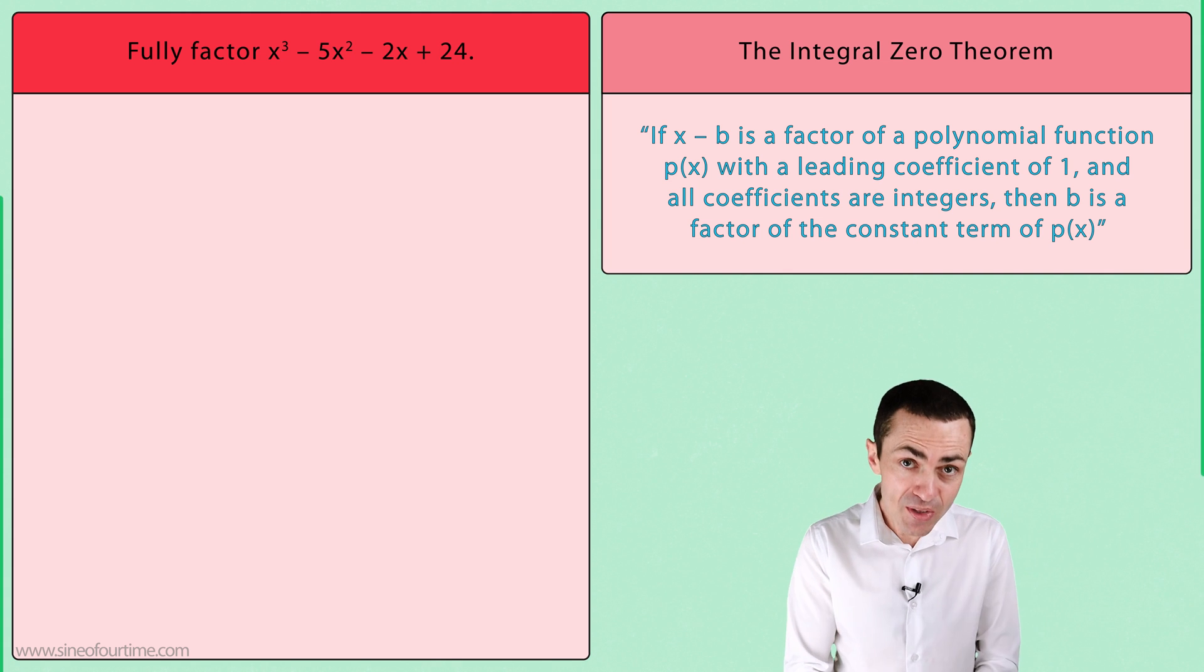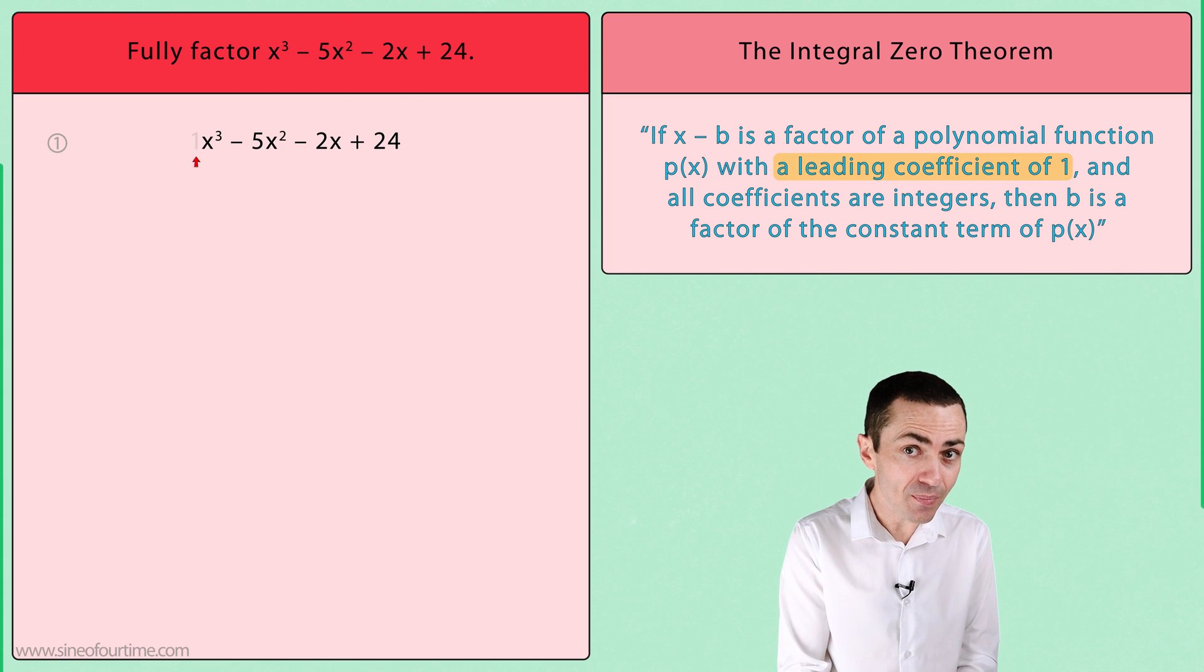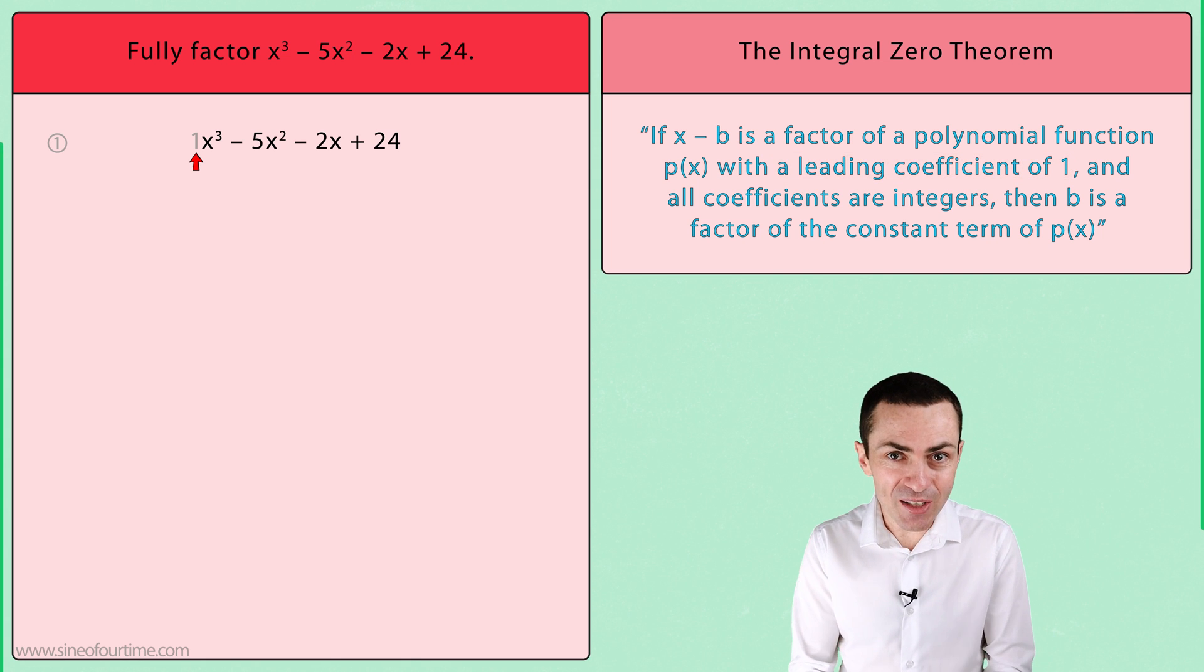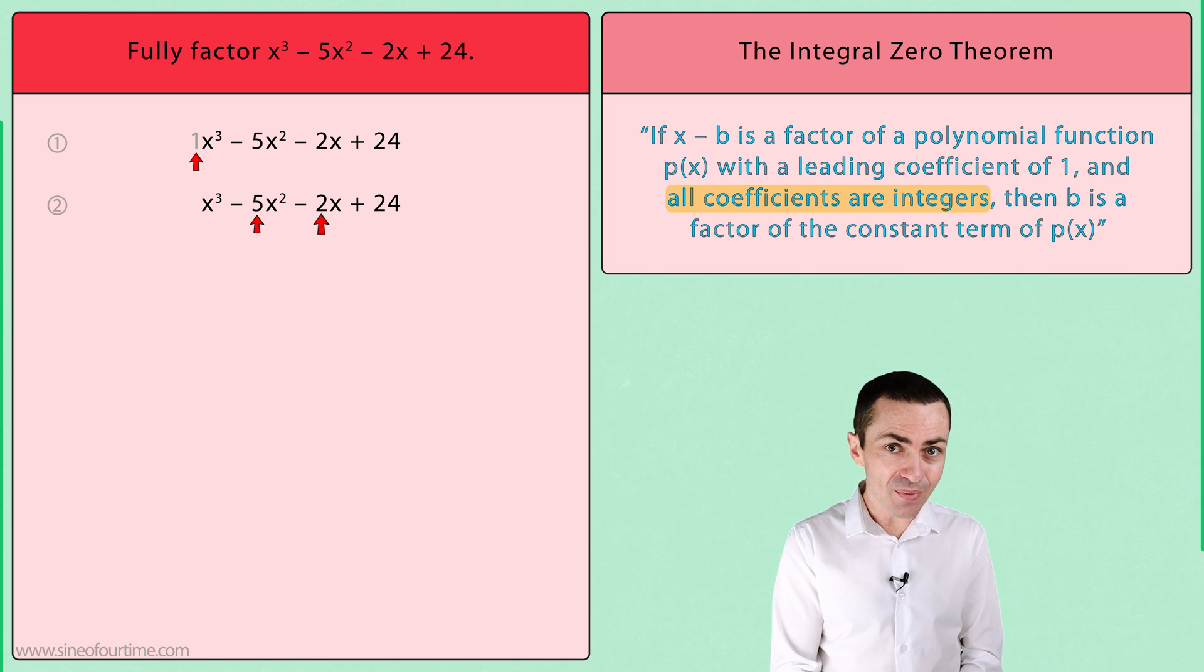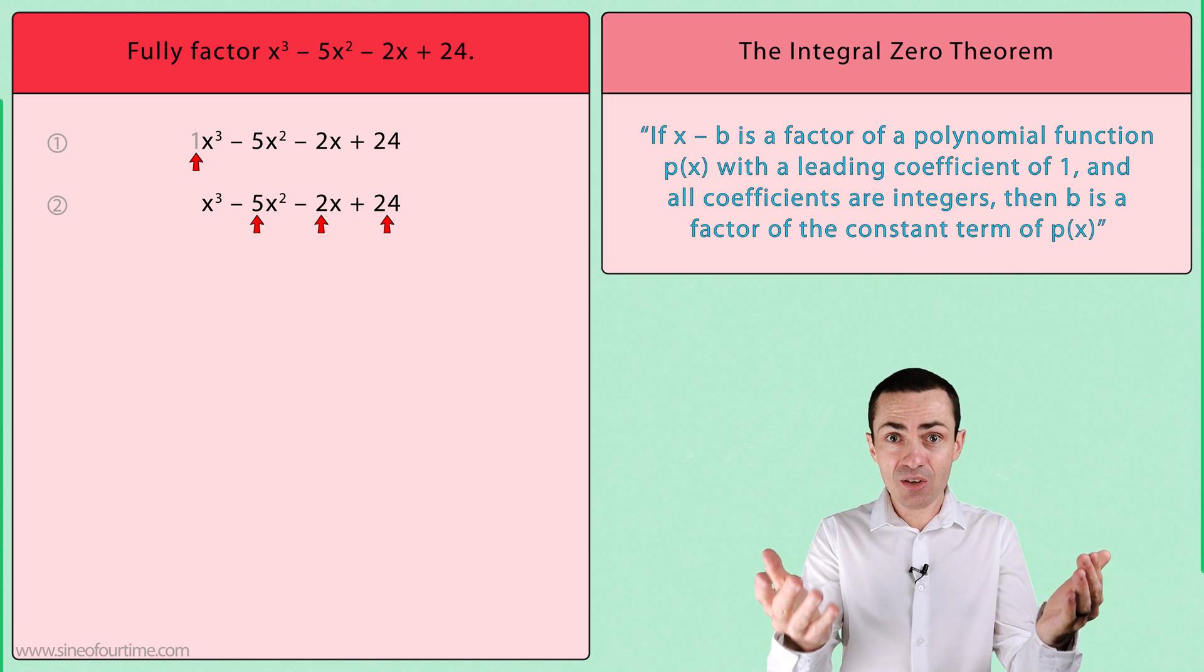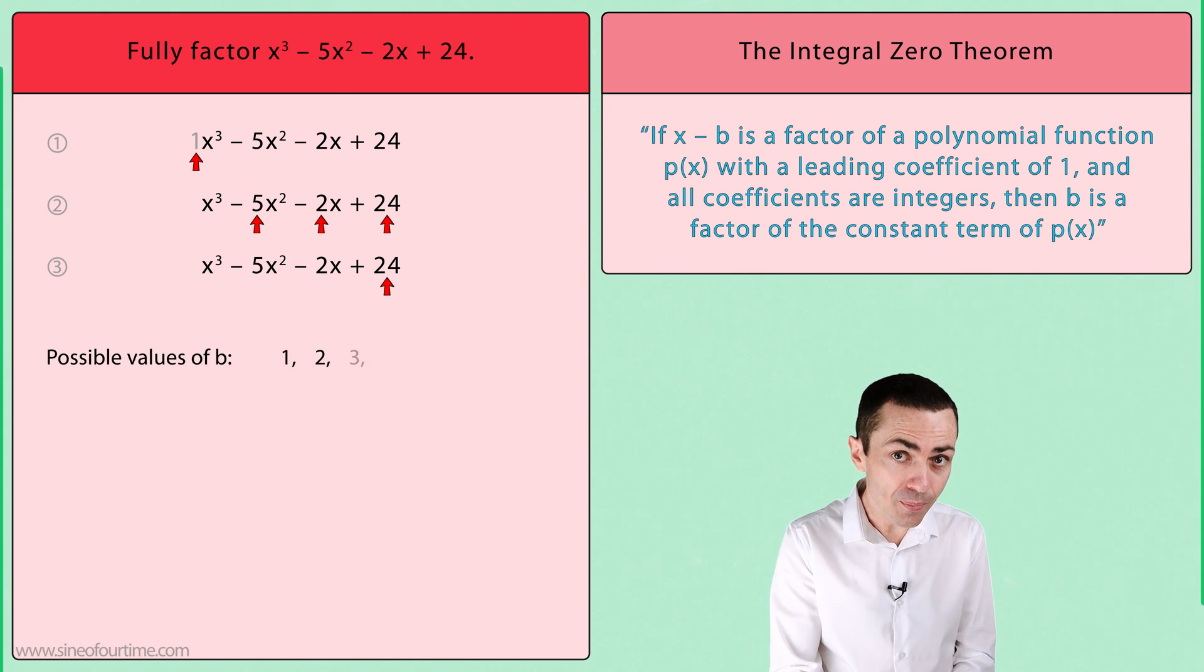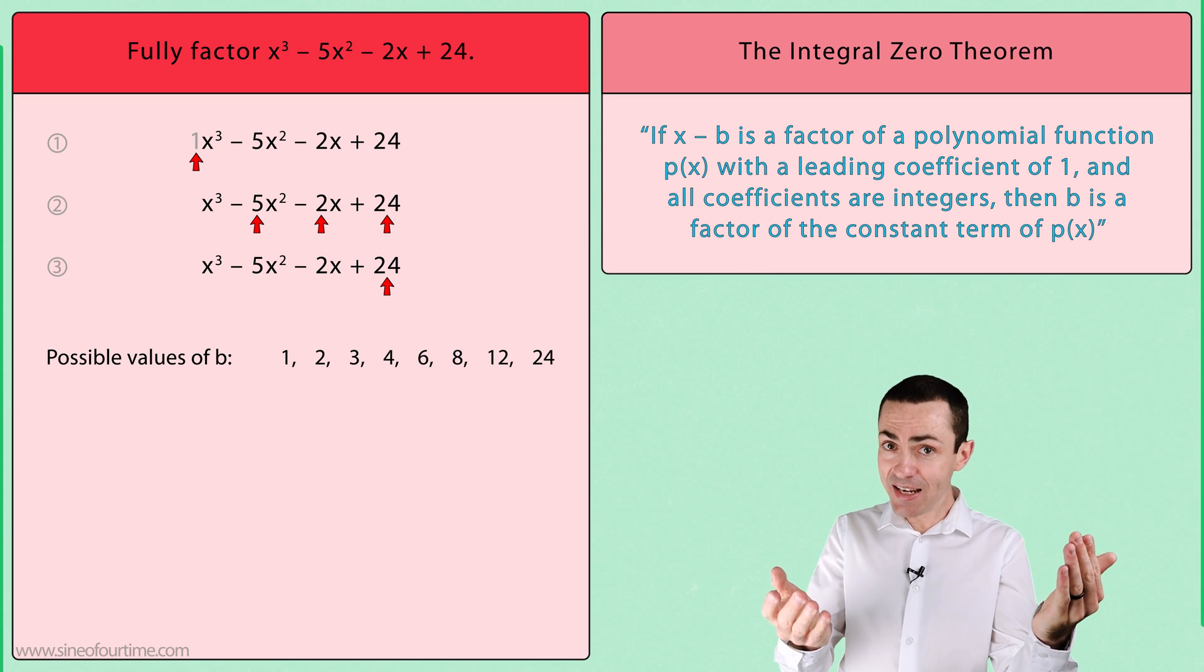I know this sounds menacing, but it is going to help us get a list of factors to test using the factor theorem. The Integral Zero Theorem states that if x - b is a factor of a polynomial function p(x) with a leading coefficient of 1 and all coefficients are integers, then b is a factor of the constant term of p(x). Breaking this down, we first have to check to see that the polynomial function has a leading coefficient of 1, which it does in this example. And then we have to check to see that all of the coefficients are integers, which they are in this example. Now with these checks complete, we can list all of the factors of the constant term of 24, and don't forget to include both positive and negative values.